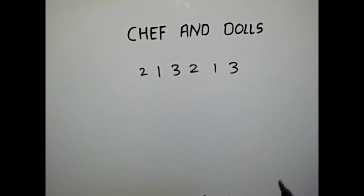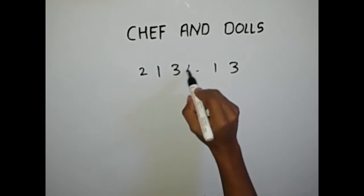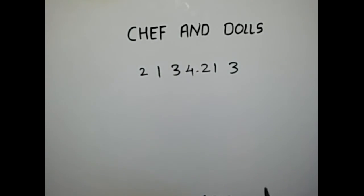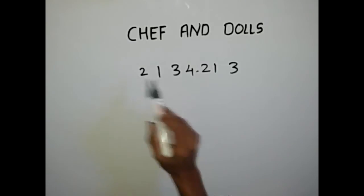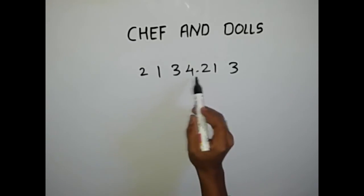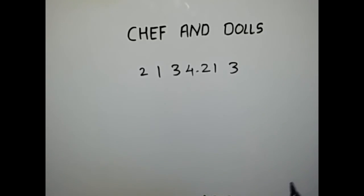Now let's modify our example a little bit. In this new example, doll number two has its spare, one has its spare, three has its pair, but four doesn't have its pair — so our answer should be four.